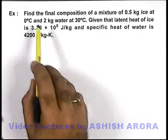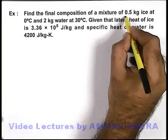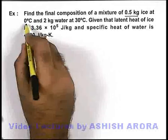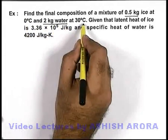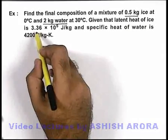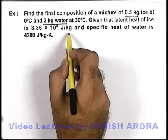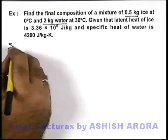In this example, we are required to find the final composition of a mixture of 0.5 kg ice at 0°C and 2 kg water at 30°C. We have also given that the latent heat of ice is 3.36 × 10^5 J/kg and specific heat of water is 4200 J/kg·K.